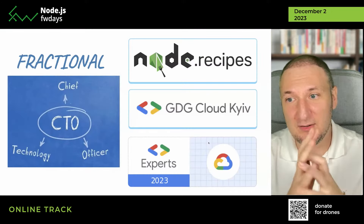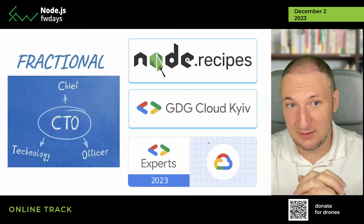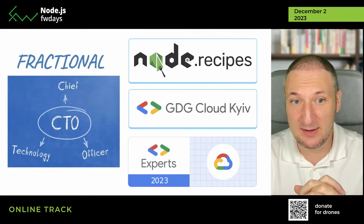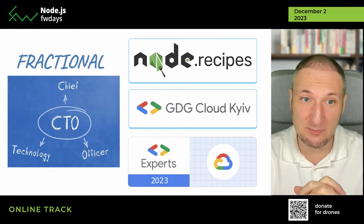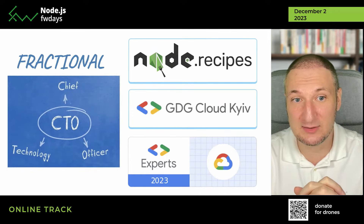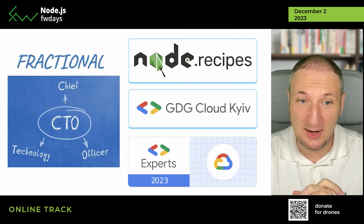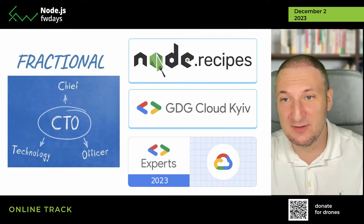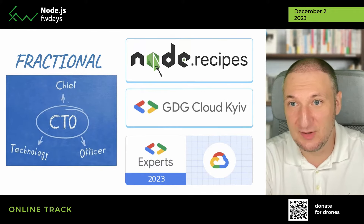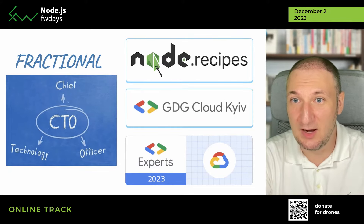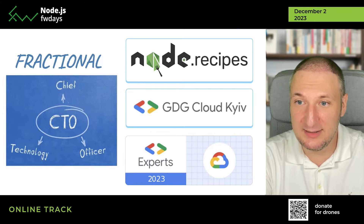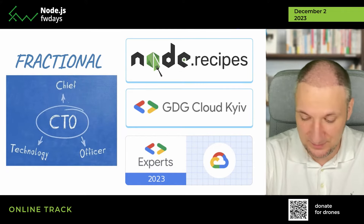We will start with my experience. First of all, I'm working as a fractional CTO. It means that a US-based startup typically hires me as a contractor to use best practices. I very often share my experience with the Ukrainian community via Telegram channel named Node Recipes. And also, as a Google Developer Expert, I lead GDG Cloud Kyiv.